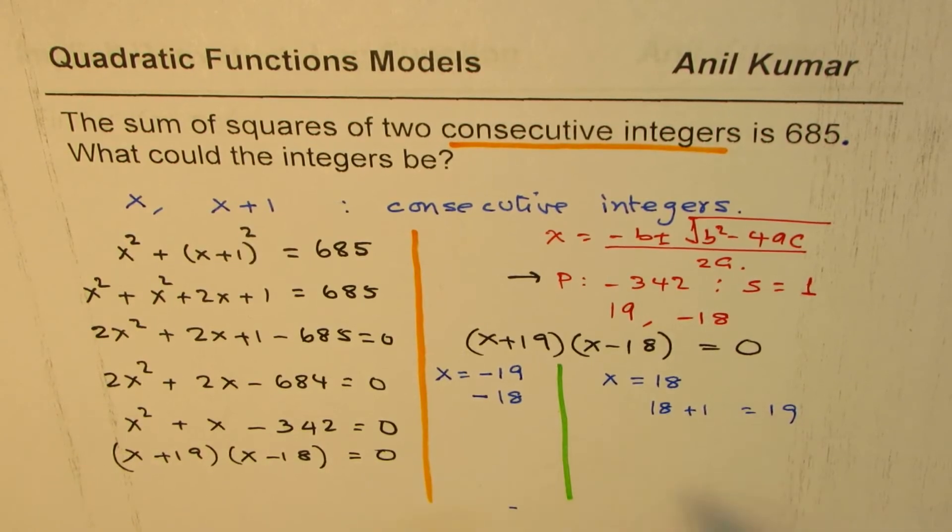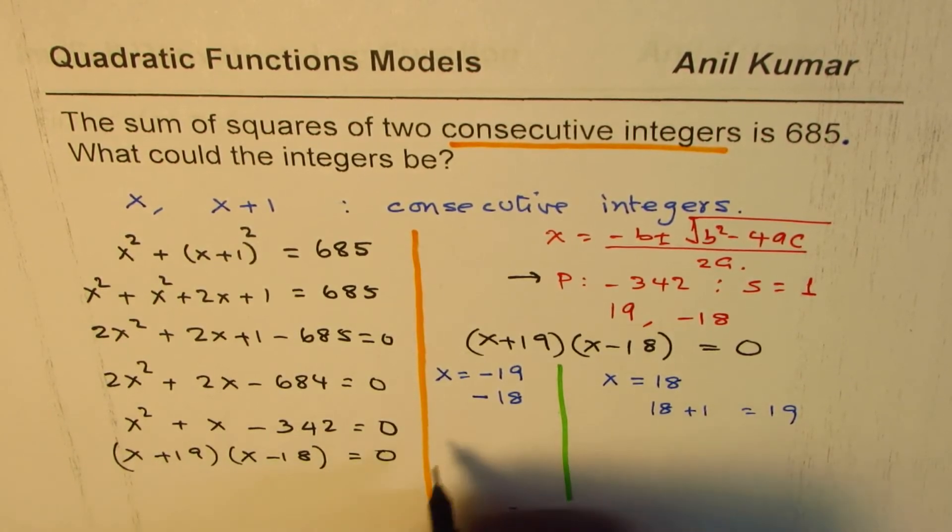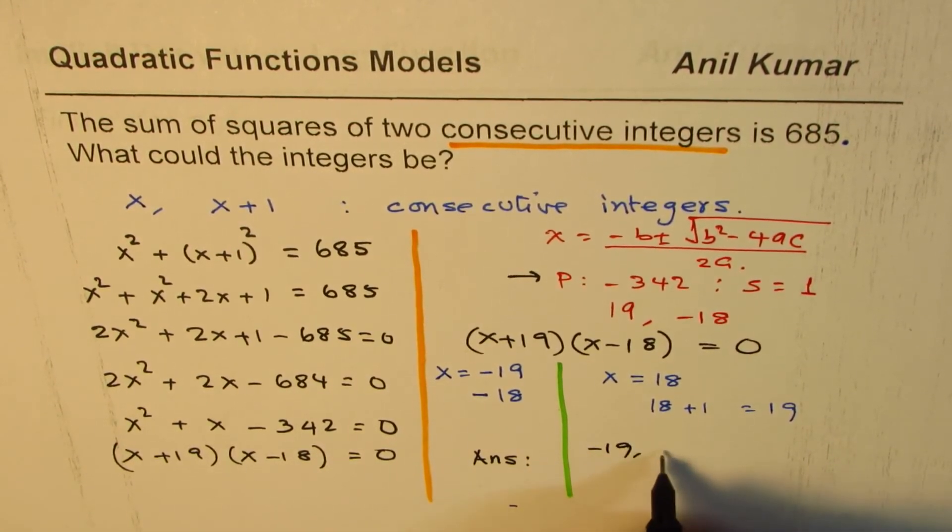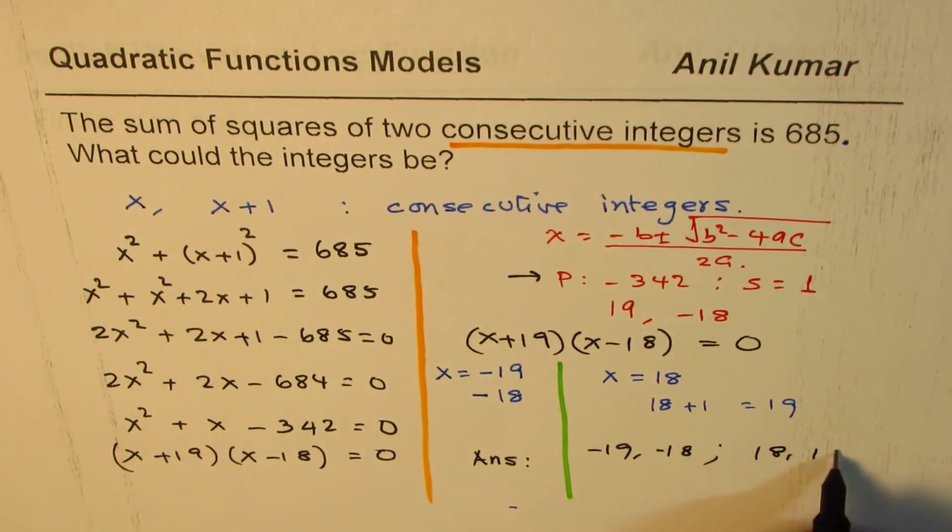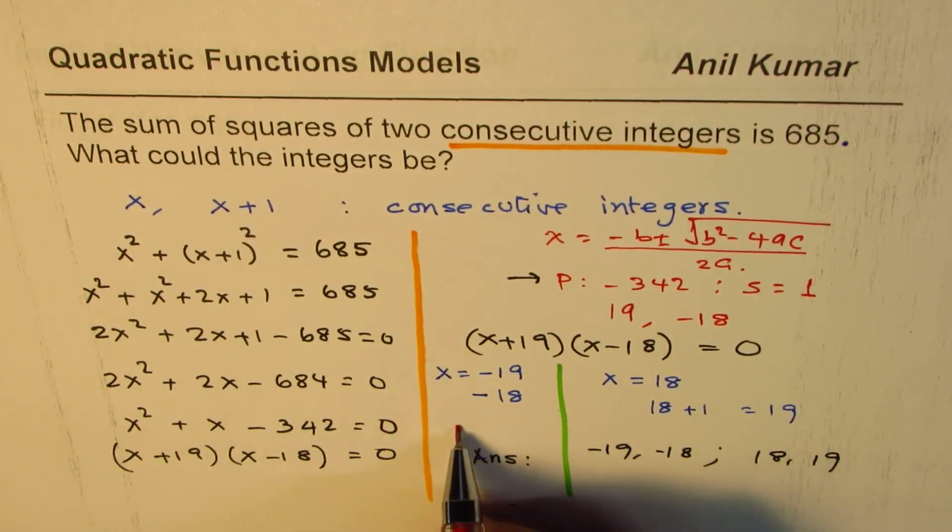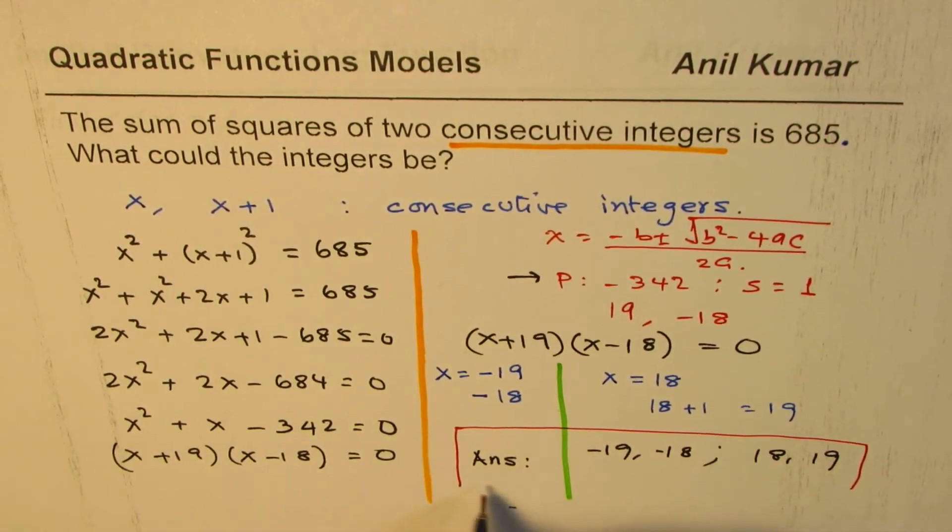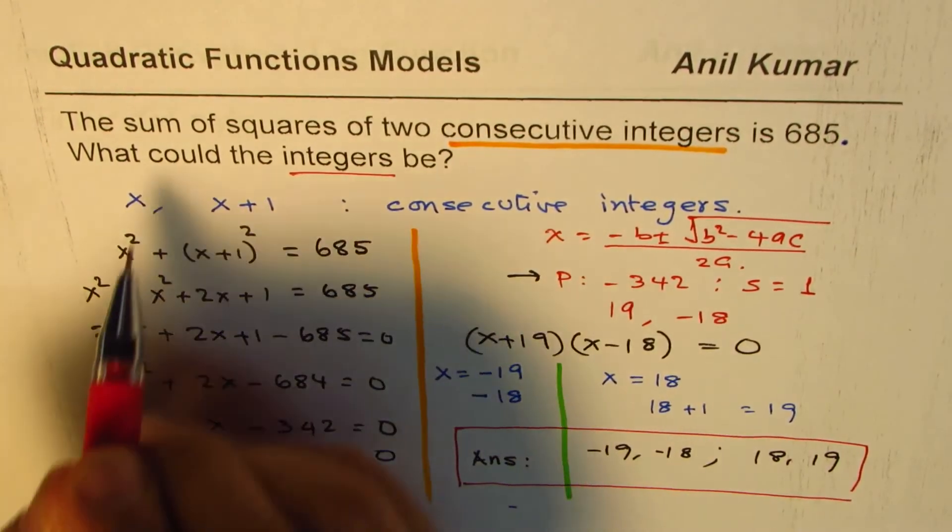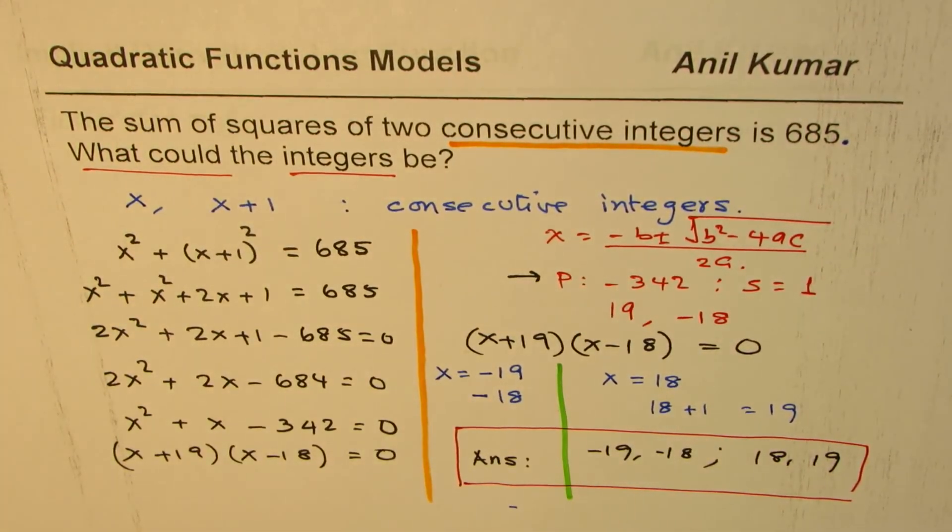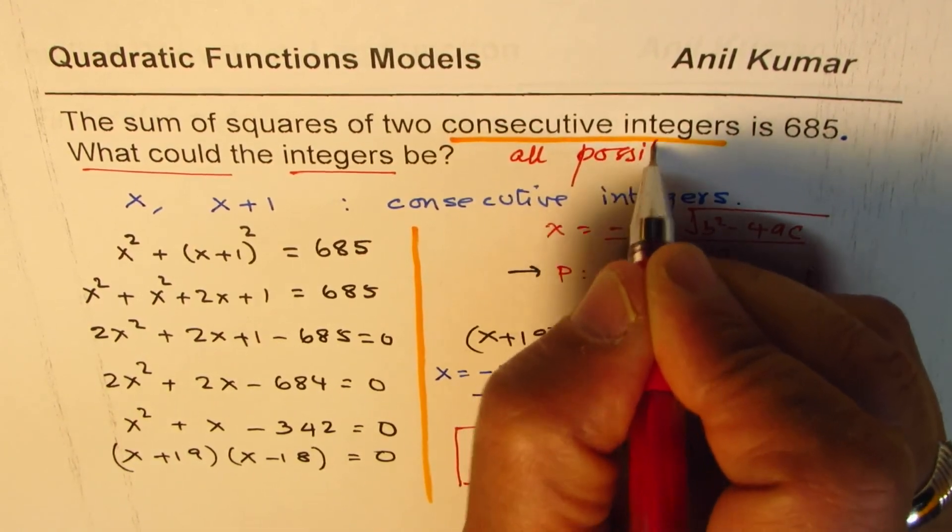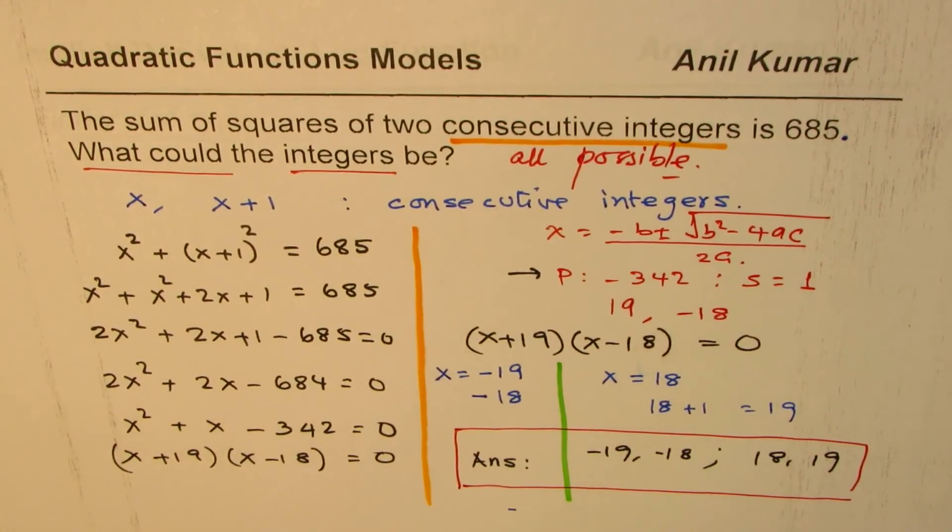So these are the two numbers. So we get solution here, let me write down answer. One combination could be minus 19 and minus 18. The other combination could be 18 and 19. So that is the solution for the given question. Don't forget to write both possible solutions since we are talking about integers and the word 'all possible' means all possible.